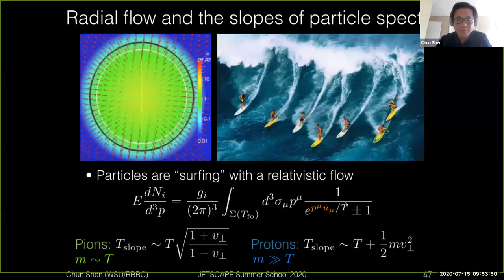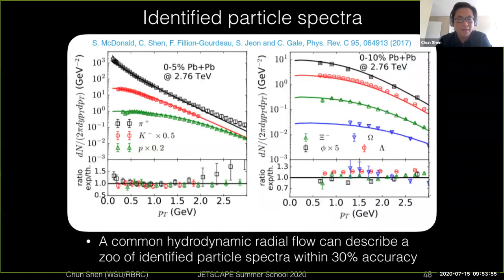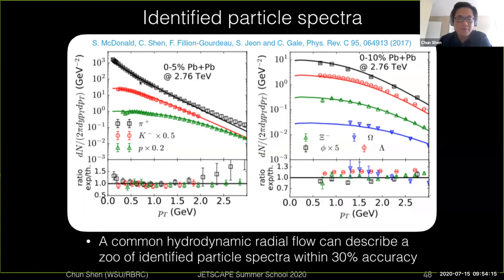This can be checked in terms of numerical simulations and compared with the data. Experiments like ALICE have measured very precisely the particle spectra for different types of particles with different masses. The black line shows pions, red lines kaons, and green is protons. There are also heavier particles beyond protons like sigma, lambda, and delta. With single hydrodynamic simulations, you can describe all these different species of particles simultaneously.